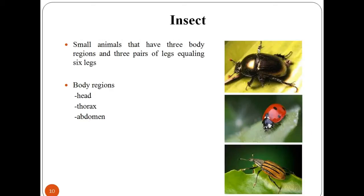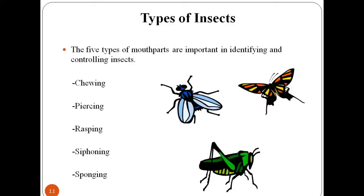What is an insect and how does it cause disease to plants or vegetation crops? Insects are a class of invertebrates that have three-part bodies: the head, thorax, and abdomen. Insects are categorized on the basis of mouth parts, which are important in identifying and controlling insects.